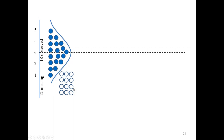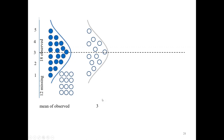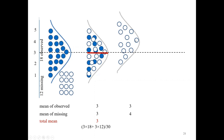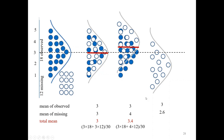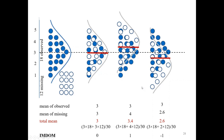For continuous outcomes, suppose I have 18 observed participants with a mean outcome of 3, and 12 missing participants. If I believe the mean of the 12 missing participants is also 3, the total mean is 3. If I believe the mean of the missing participants is 4, the total mean becomes 3.4. Or if the mean of the missing is less than 3, the total mean shifts accordingly.